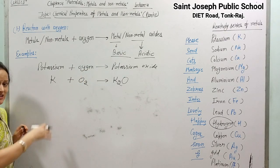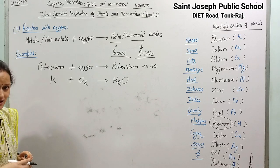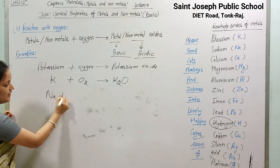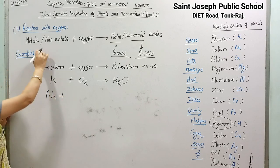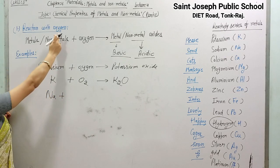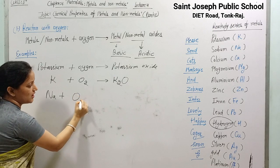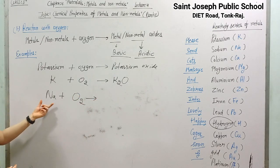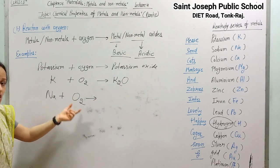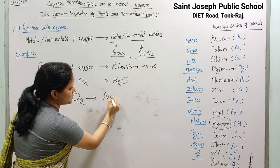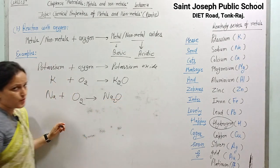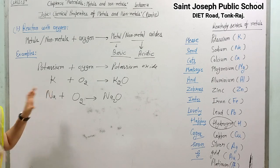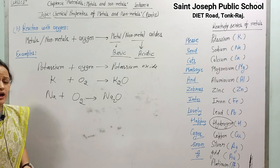Taking the second metal, sodium: directly writing the chemical equation — symbol of sodium is Na; when sodium reacts with oxygen (O₂) it forms sodium oxide (Na₂O). These two — potassium and sodium — are highly reactive metals.